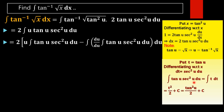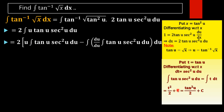Since the derivative sec²(u)·du is already present, the function is easily integrable as ∫t·dt = t²/2 + C. Since t = tan(u), this gives tan²(u)/2 + C. So ∫tan(u)·sec²(u)·du = tan²(u)/2.